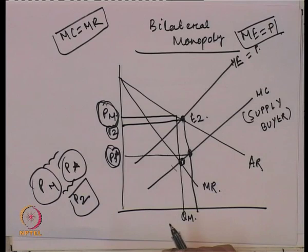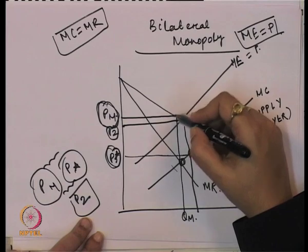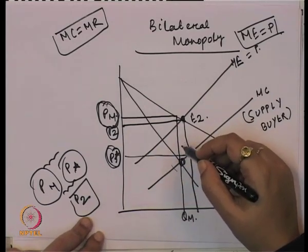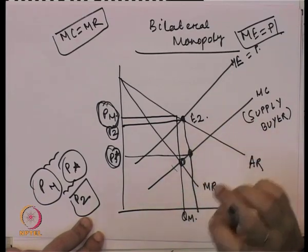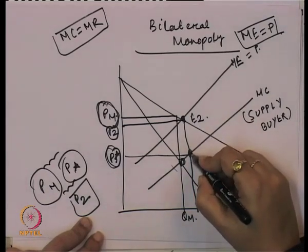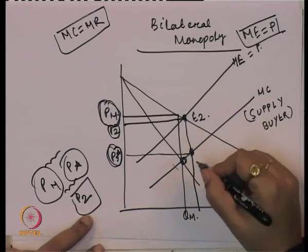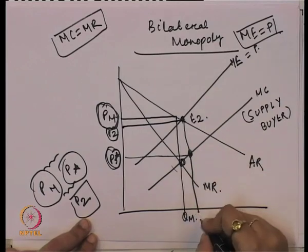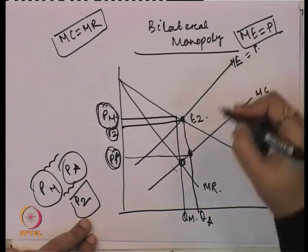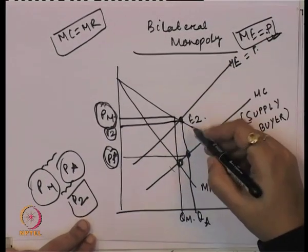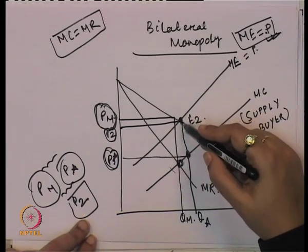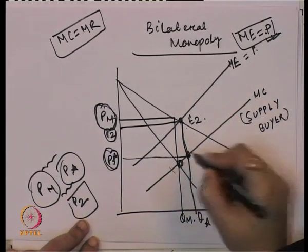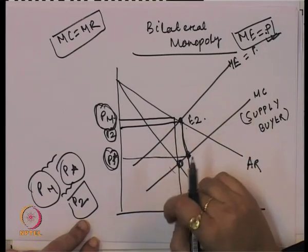How do we get these three price points? PM — the monopoly price — is obtained through the MC=MR rule, giving us price PM and quantity QM. P* is obtained through the supply curve of the buyer: in the case of the monopsonist, P must equal marginal cost, meaning they pay the price with respect to the supply of the input. We first identify the quantity level where ME equals P — that is Q* — and then from the corresponding point on the MC curve we derive the monopsonist price P*.